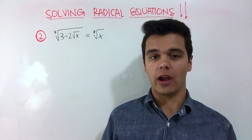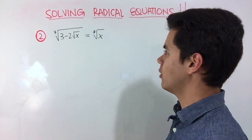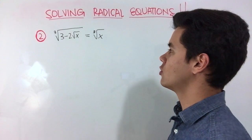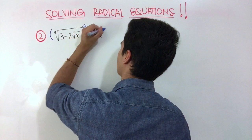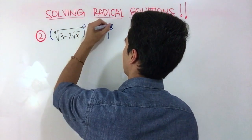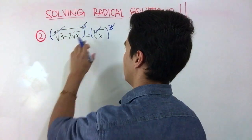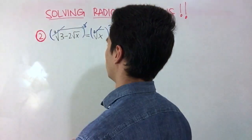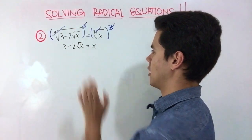For our second example, we have that equation. What we can do to make it look better is raise the entire expression to the power of 3. This 3 will cancel out with the cube root, and the same thing will happen with this radical. So if we get rid of these two radicals, we end up with this expression. However, we still have one radical here.